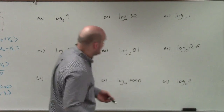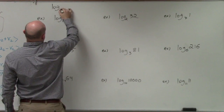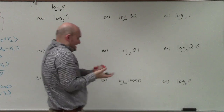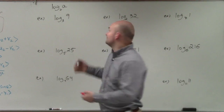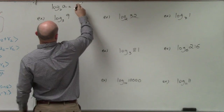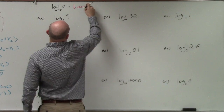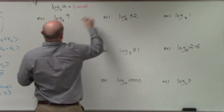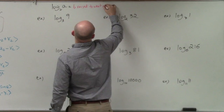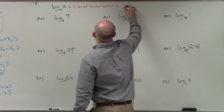When we have a logarithm — for instance, let's use log base B of A — what exactly this is saying and what we're expecting when we evaluate it is: B raised to what number is A?